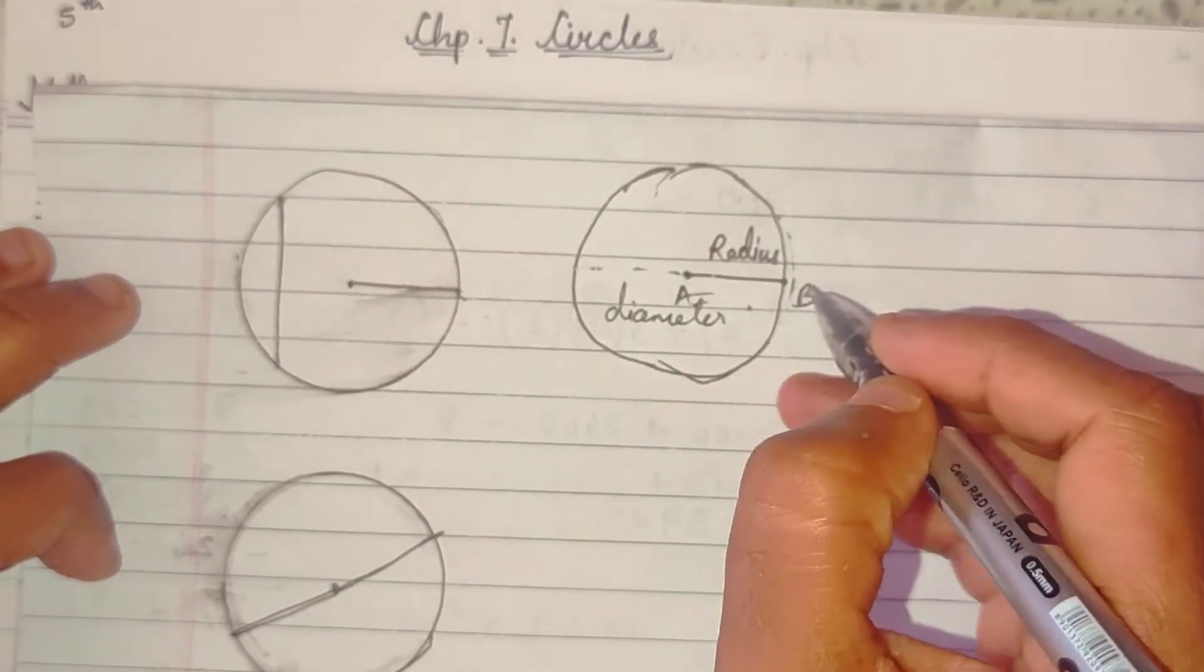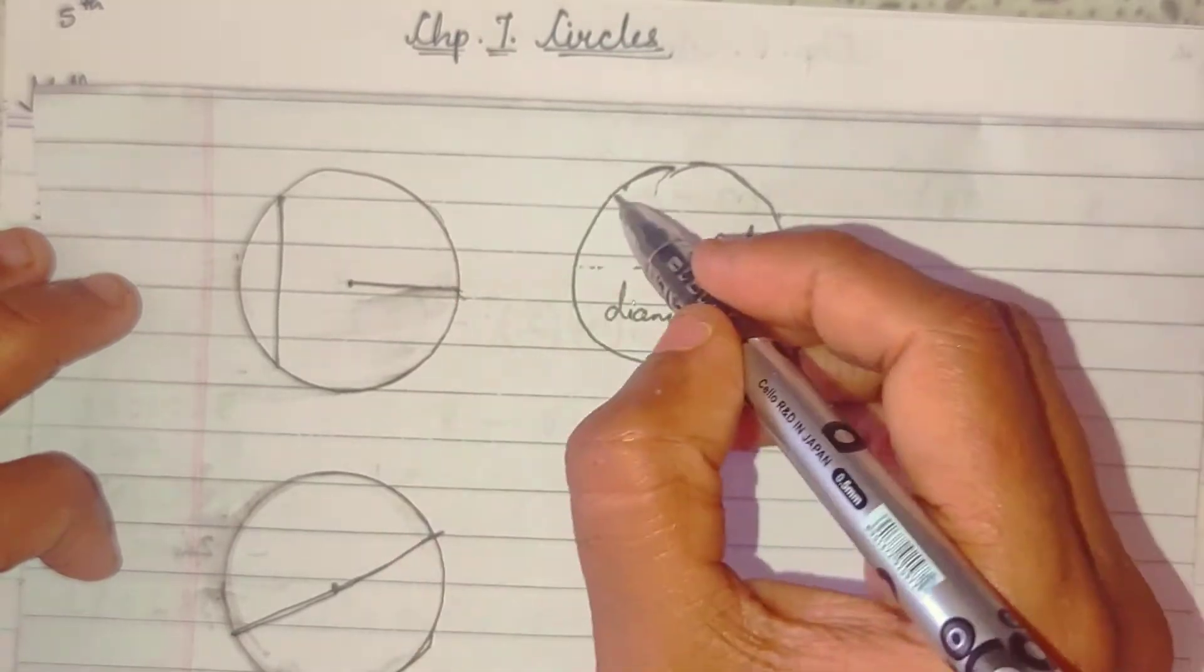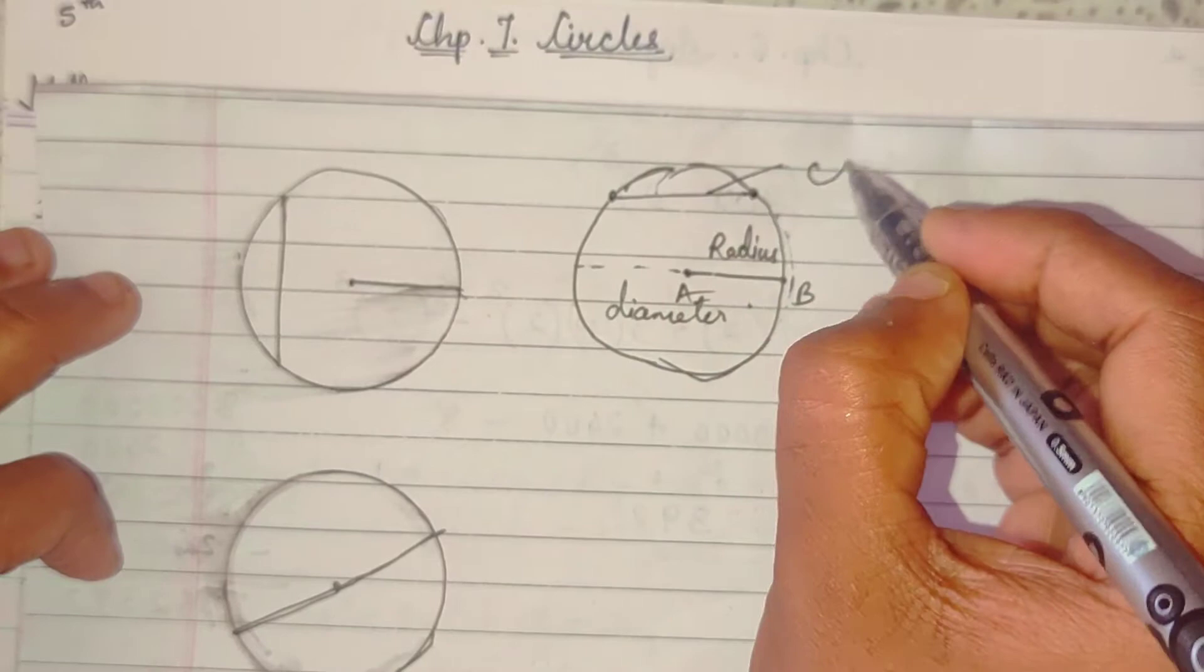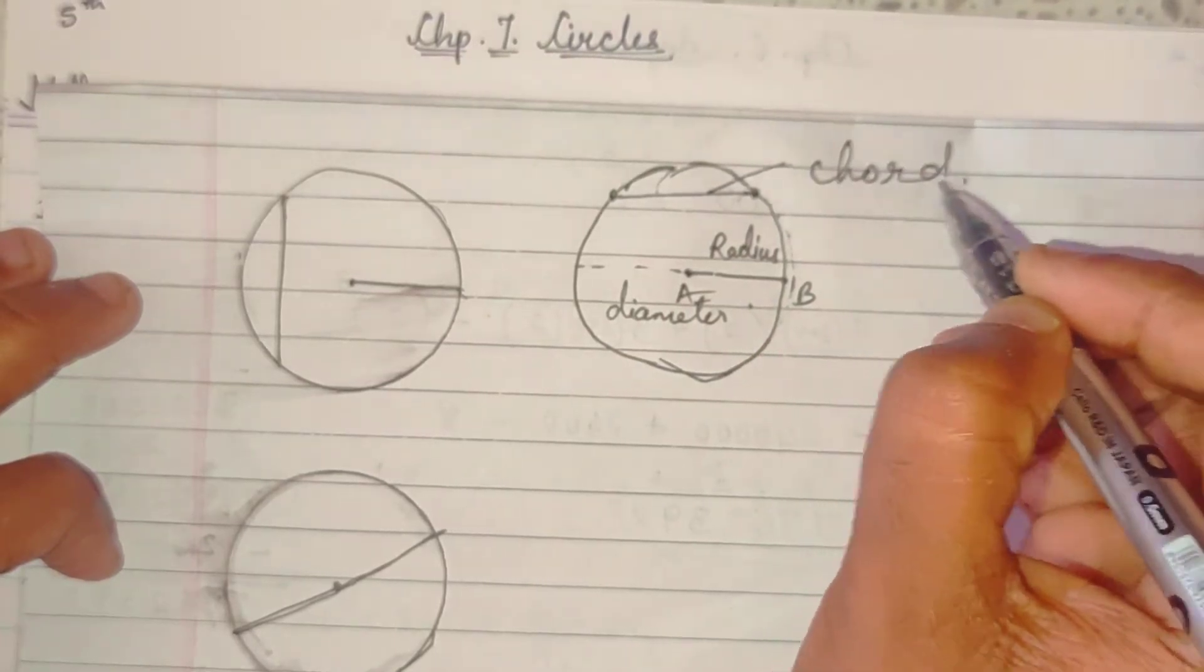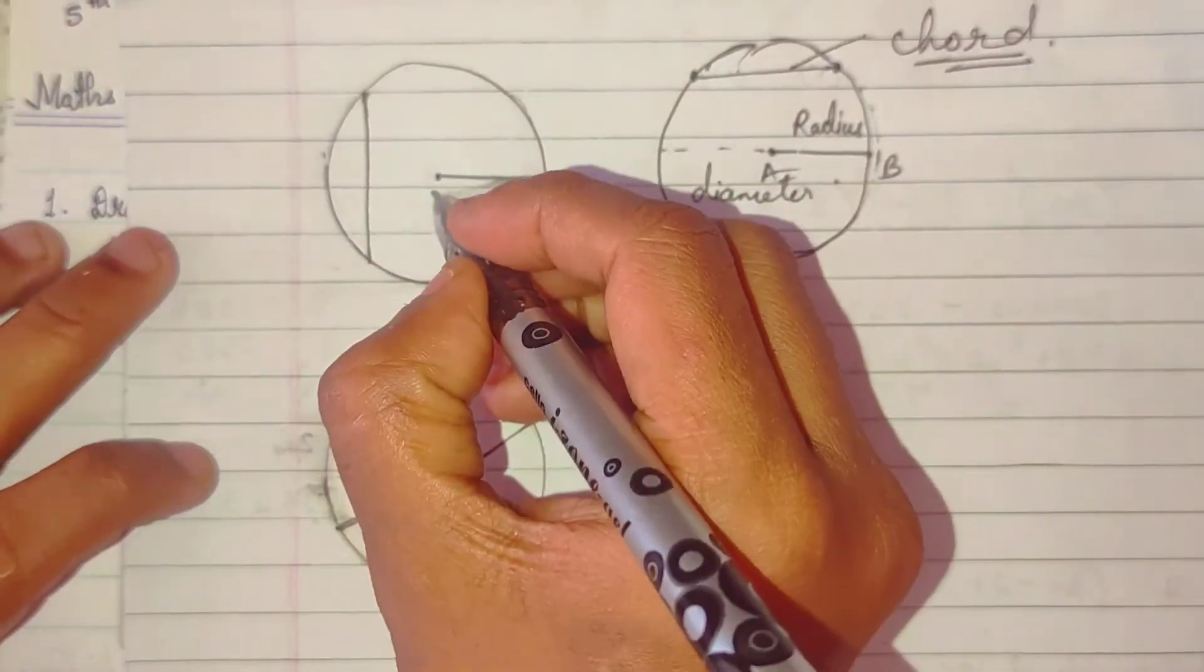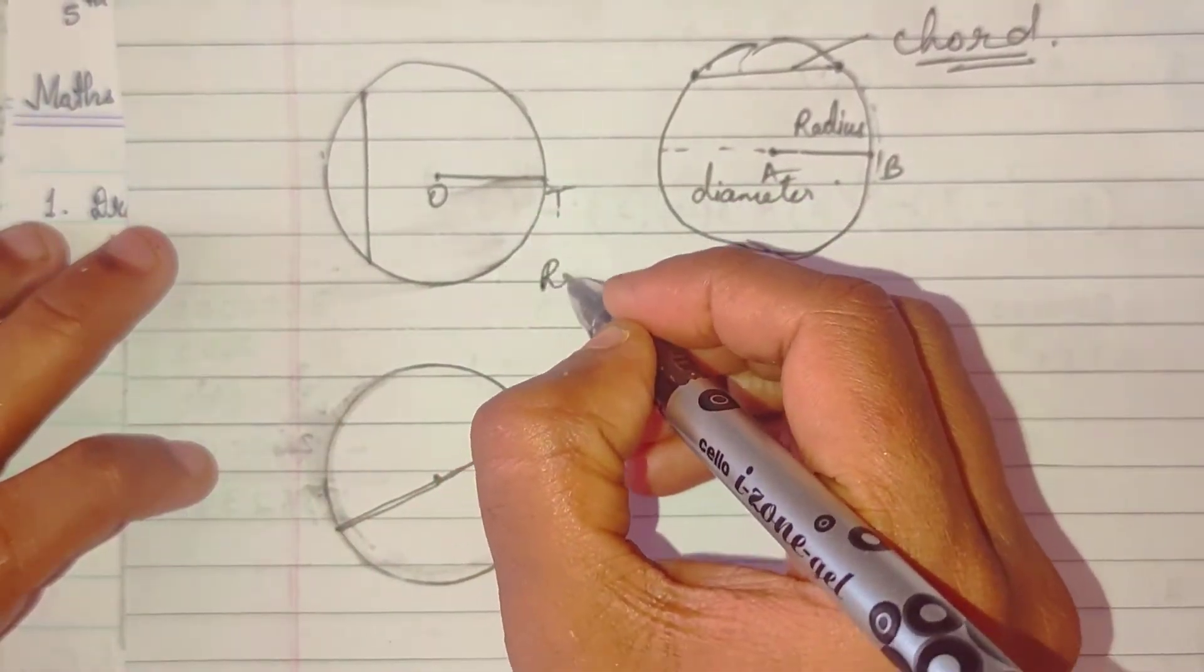And, na to woh center hota hai, alag se koi do part ko join karta hai, that is said to be a chord. It is not chawd, it is chord. See, yahan pe ye samjho, OT.